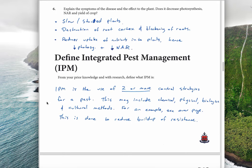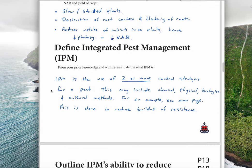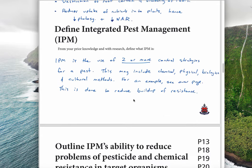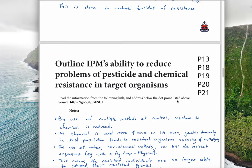The next dot point, define IPM. We should already know well and truly what IPM is. IPM is the use of two or more control strategies. This is important because it could just be two or it could be four, but it has to be two or more. Using just chemicals or just physical or just biological on their own is not IPM. Two or more control strategies for a pest. This may include chemical, physical, biological and cultural methods. This is done to reduce the buildup of resistance.